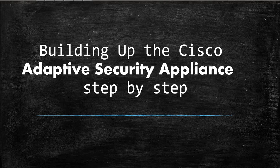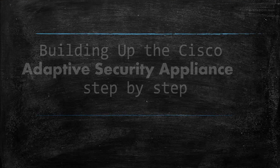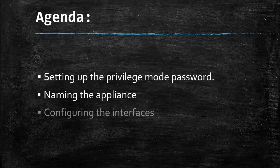Hello and welcome to the video tutorial on building up the Cisco ASA step by step. My name is Sai and I am from Mumbai and a beginner as you are. Today we are going to do the basic configurations needed to get the ASA up and running. The agenda includes setting the privilege mode password, naming the appliance, and configuring the interfaces.